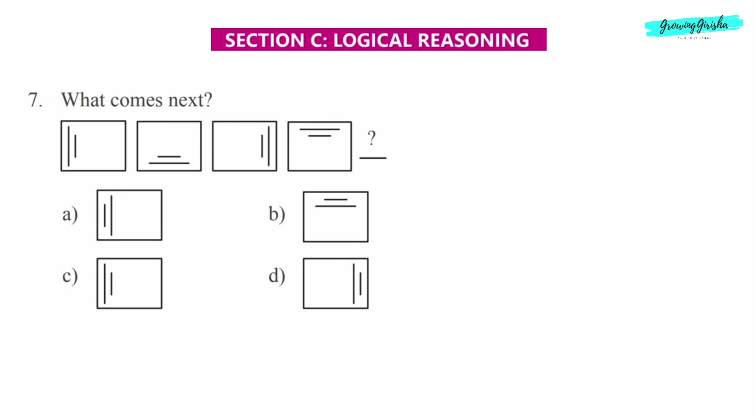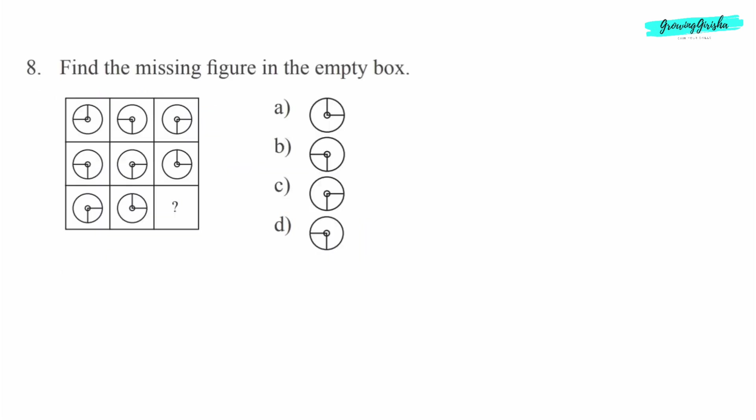In the third square the lines are on the right side. In the fourth side the lines are at the top side. So in the fifth square the lines will be again at the left side. Correct answer is option C. Question 8: Find the missing figure in the empty box.